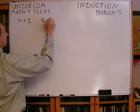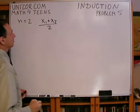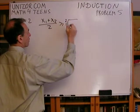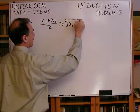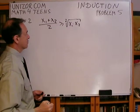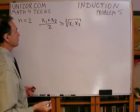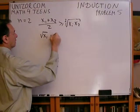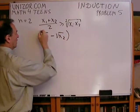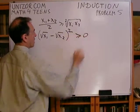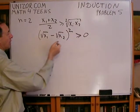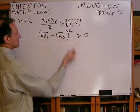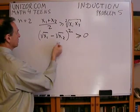We will try to prove it for the case when n is equal to 2. We have to prove that (x1 + x2) / 2, that's the average of two numbers, is greater than the square root of their product. So this is the arithmetic average and this is the geometric average. This is actually quite simple. Every number, positive or negative, when squared gives a non-negative result.